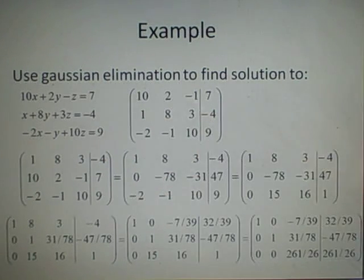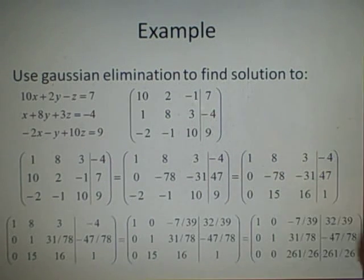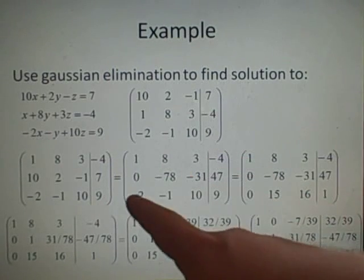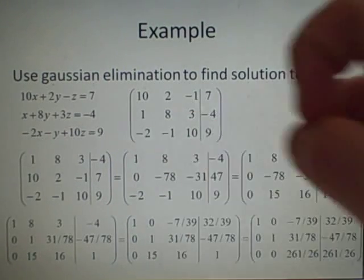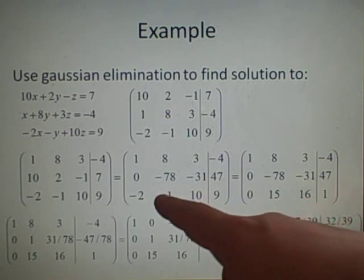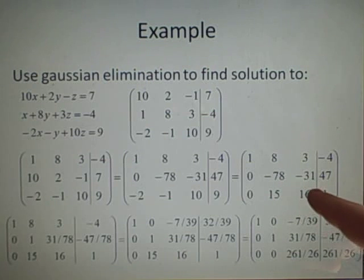Next job is to get this to equal a 0. So what we're going to do is add 2 of this row. So if we add 2 of this row to this row, we'll get a 0 here, because minus 2 plus 2 times 1 is 0. We do exactly the same here, so we have minus 1 plus 2 times 8, which is 15, and then we get 16 and 1. So that is our first column done.